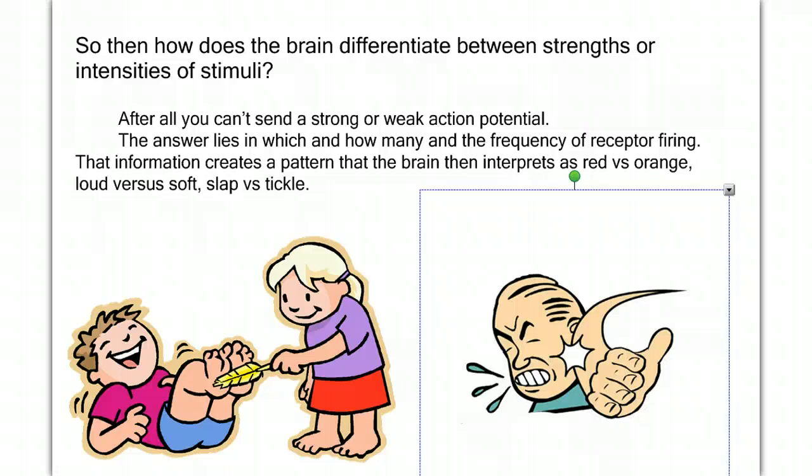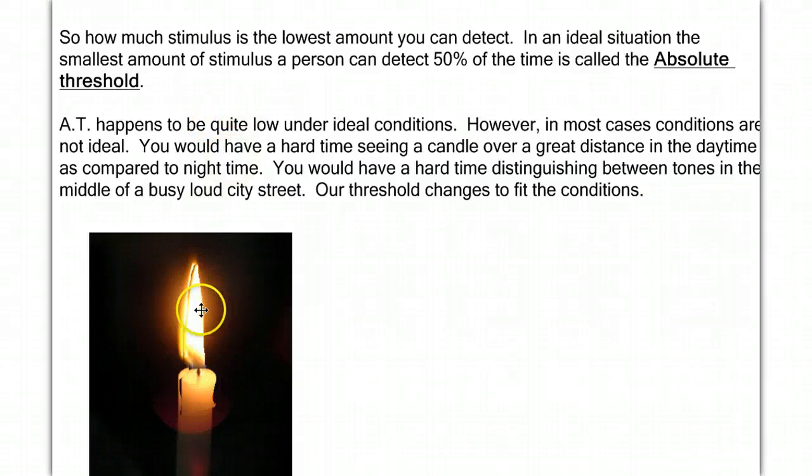So now we need to move on to some other vocabulary terms and concepts. The first one is absolute threshold. What's the lowest amount of stimulus you can detect? Well, we have a term for this. It's called the absolute threshold, and it's defined as the smallest amount of stimulus a person can detect 50% of the time.